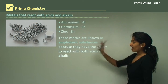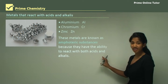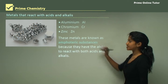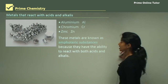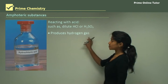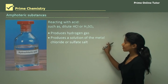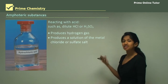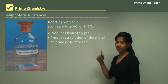These metals are called amphoteric substances because they have the ability to react with both acids and alkalis. It's important to remember the name amphoteric. When reacting with an acid, they produce hydrogen gas as a product as well as a solution of metal chloride or sulphate salt.